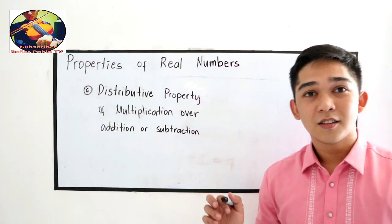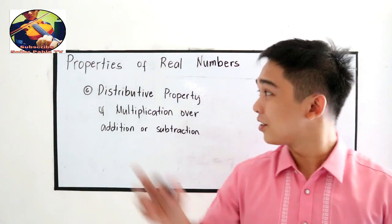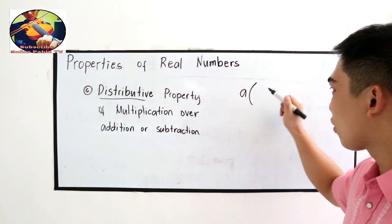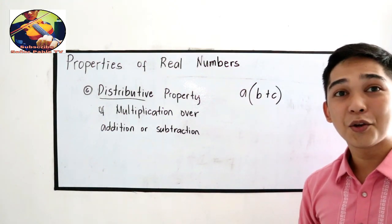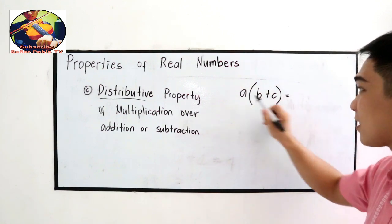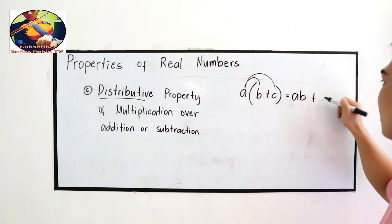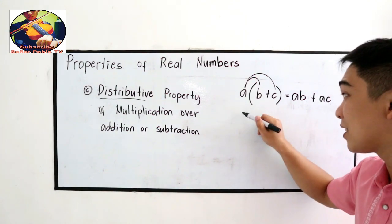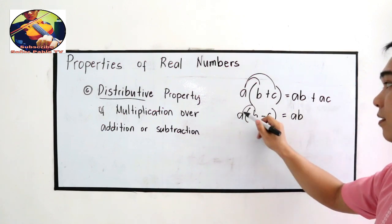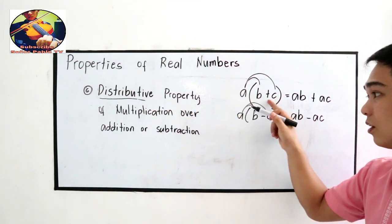Our sixth property is the distributive property of multiplication over addition or subtraction. From the word 'distributive,' we distribute the factor outside the parentheses. So A(B + C) equals AB + AC, and A(B − C) equals AB − AC. That is why it is called the distributive property of multiplication over addition or subtraction.